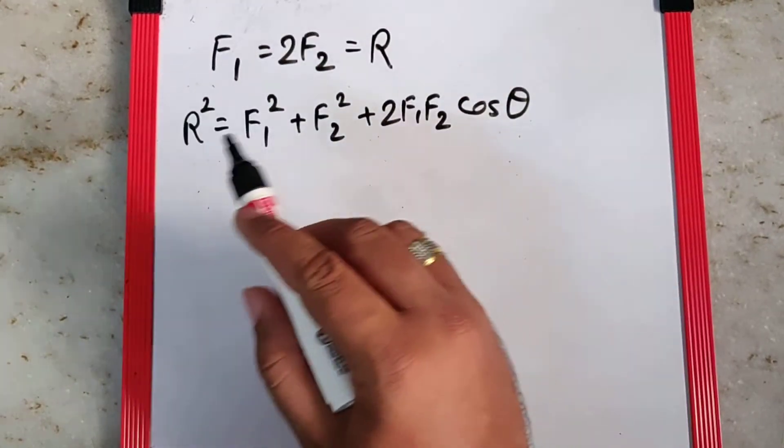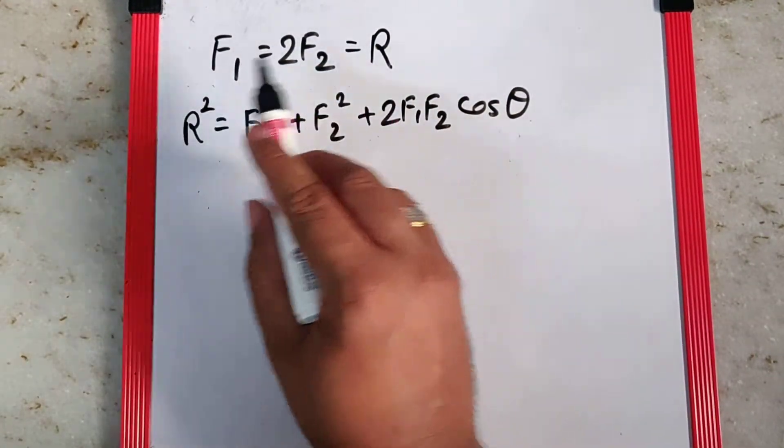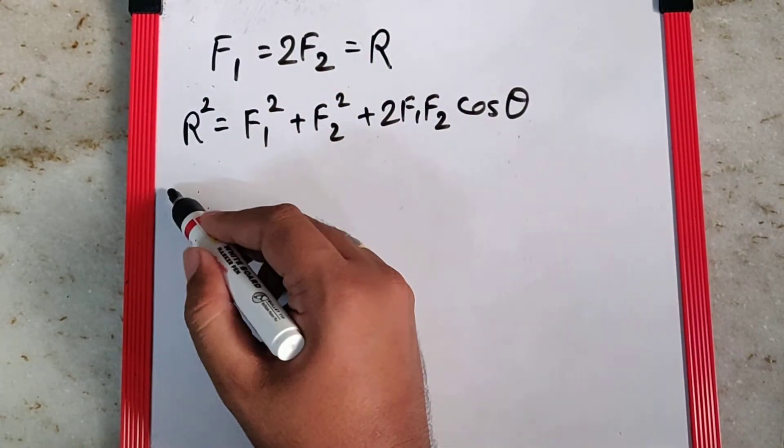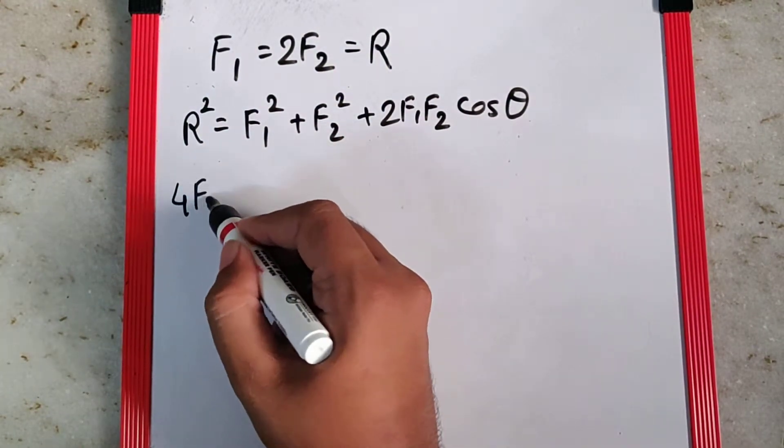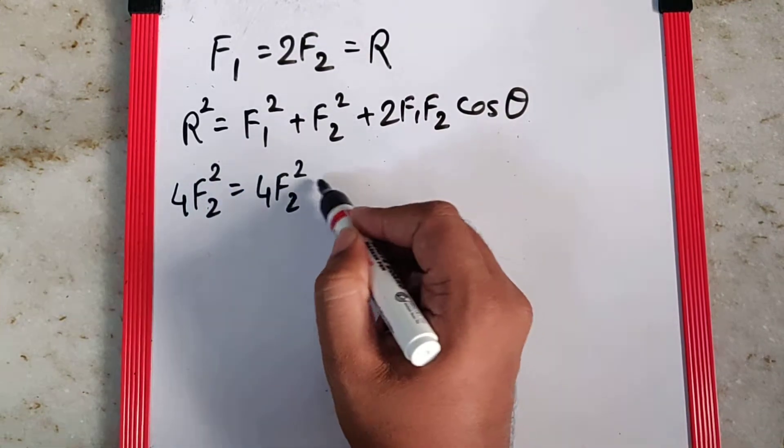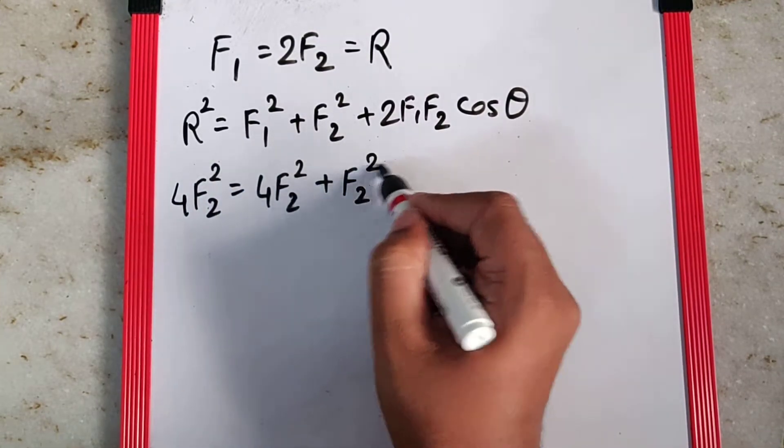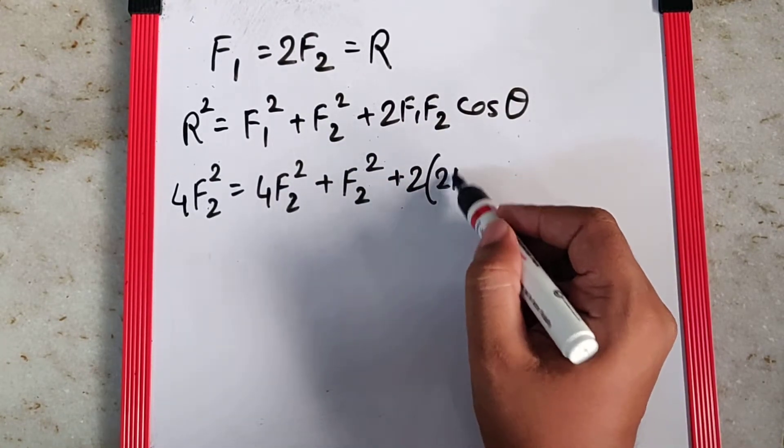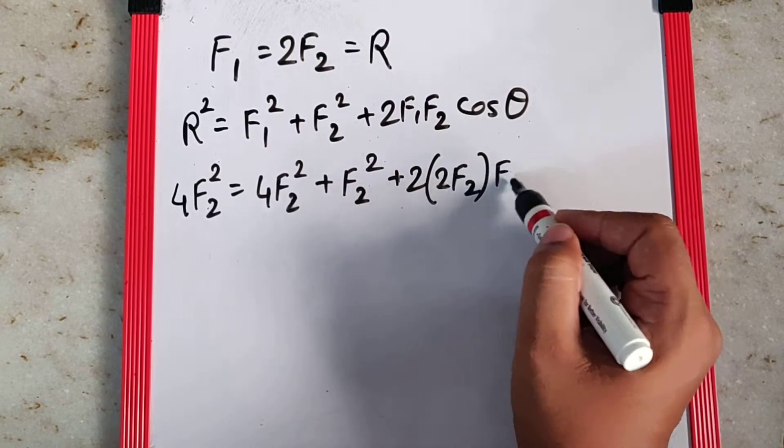So what we can do is, we can replace everywhere R and F1 as 2F2. Once we do that, I can say this becomes 4F2 square, this also becomes 4F2 square plus F2 square as it is, plus 2 times, instead of F1 I can again write 2F2 and the F2 part remains the same, gives you cos theta over here.